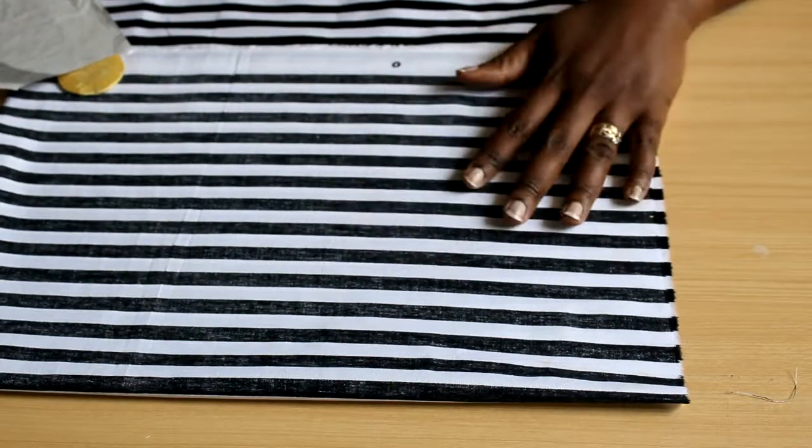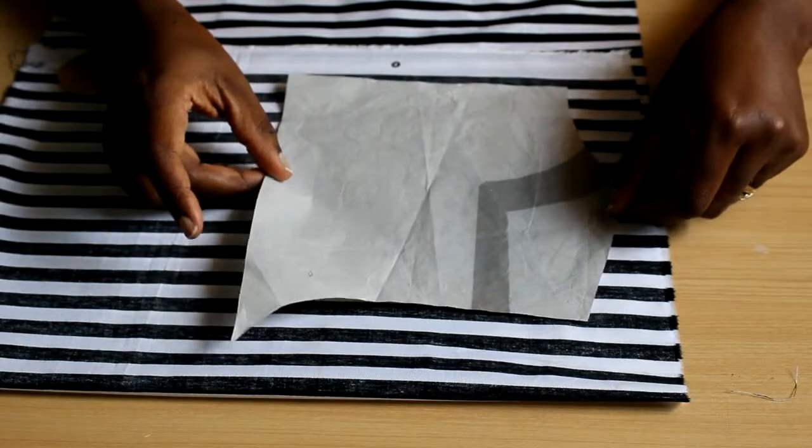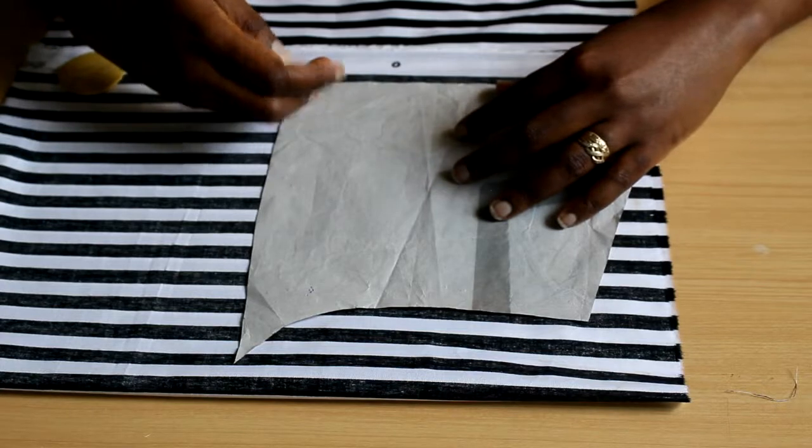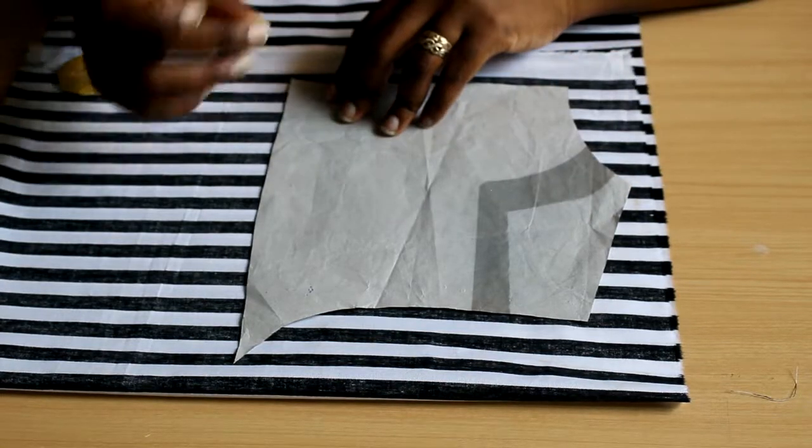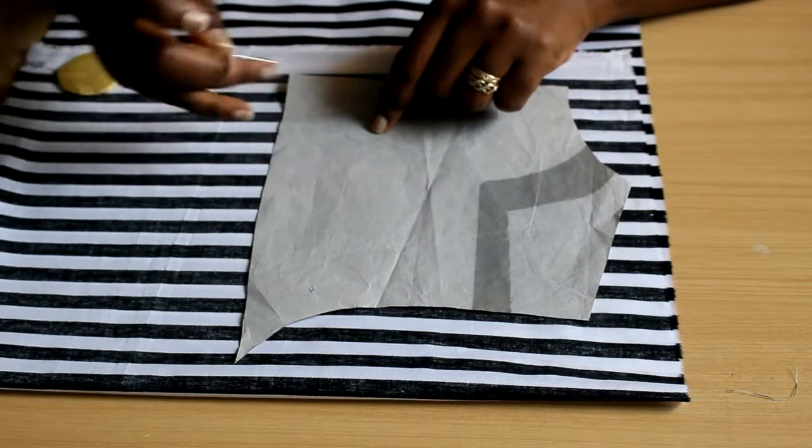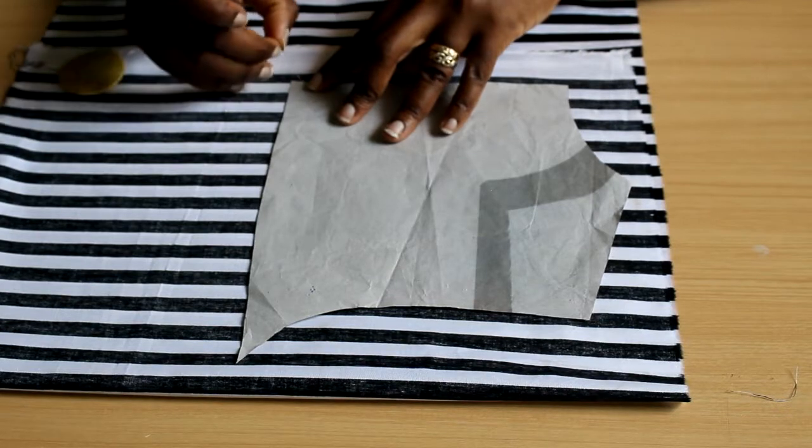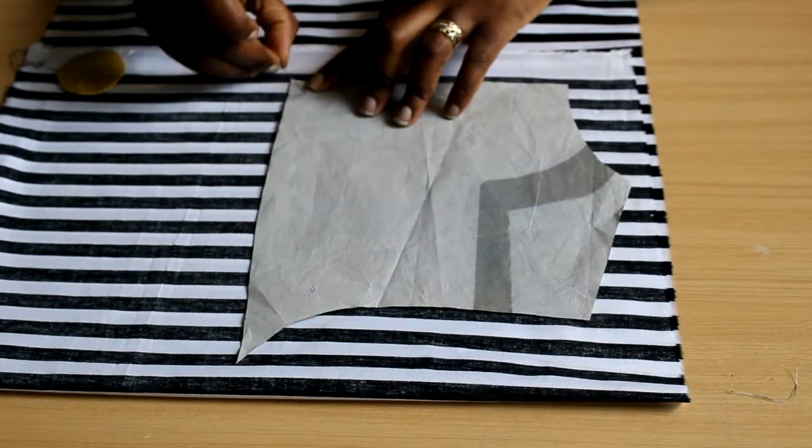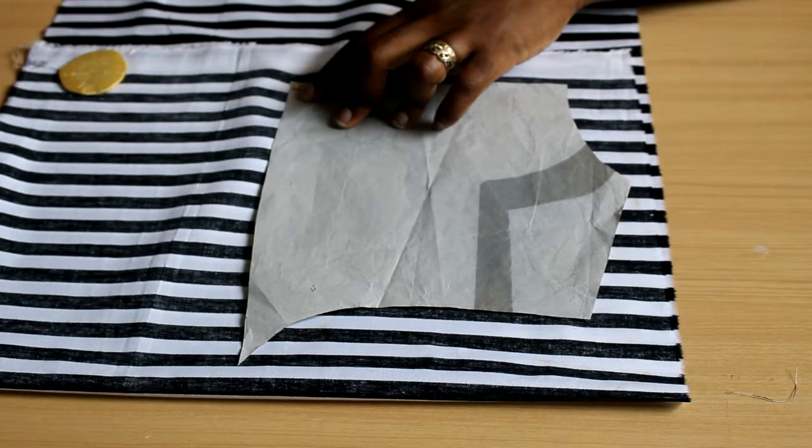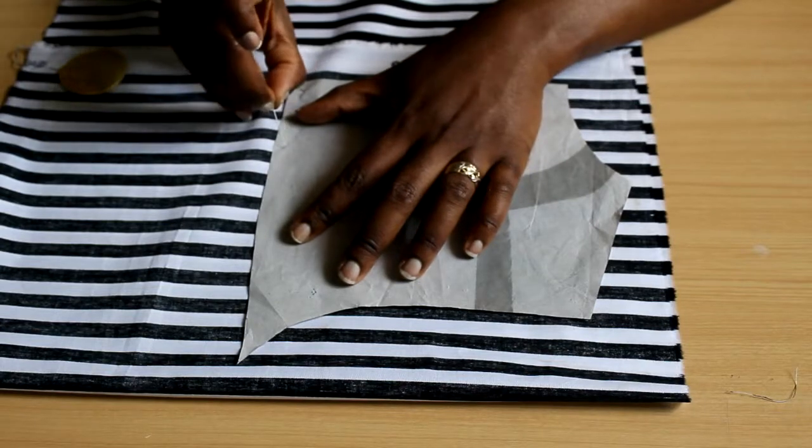But now let's just say we're using this pattern. How do we pin? Are there any rules about pinning? The way I was taught was to make sure the sharp ends are all within the pattern. You don't want anything sticking out of the pattern so that it doesn't interfere with your scissors. So at the corners, you usually pin at a 45 degree angle and on the straight, you just pin parallel to the edge of the pattern.